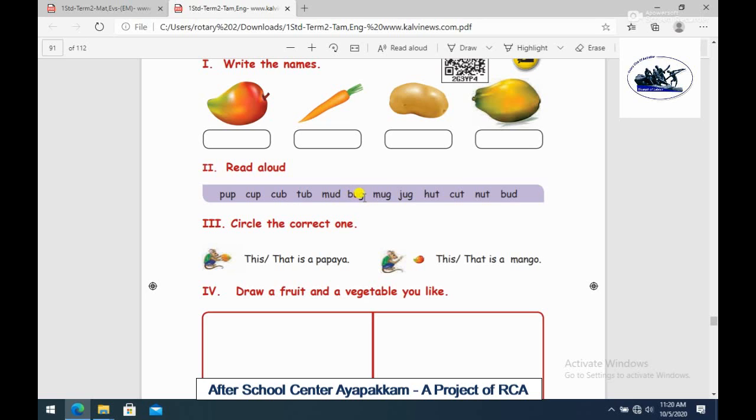B-U-G Bug. That is the word. M-U-G Mug, J-U-G Jug, H-U-T Hut. This is the word. C-U-T Cut, N-U-T Nut, B-U-D Bud. So how do we pronounce it? Again and again, two or three times. Do we pronounce it? Okay.